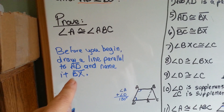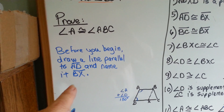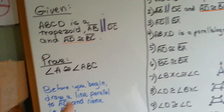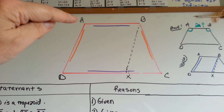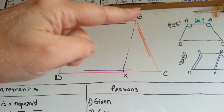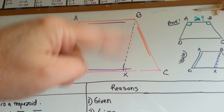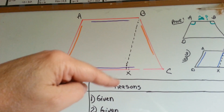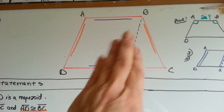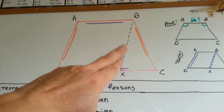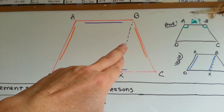Before you begin, draw a line parallel to AD and name it BX. We've got our dotted imaginary line there that we've added to the original drawing — that wasn't there before. This additional line is going to help us.